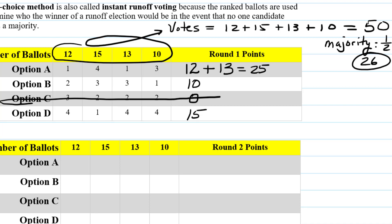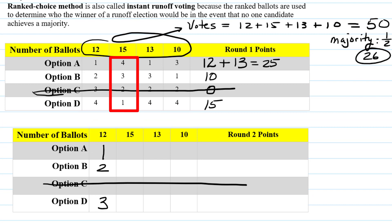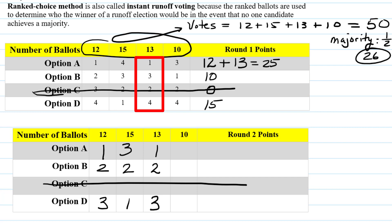When we eliminate option C, we have to renumber the votes for the remaining options. Crossing off option C, in the first ballot variation A had first, B had second, and D had fourth — but now with only three candidates, it's A first, B second, D third. In the second column with 15 ballots, D is still first, but with second place eliminated, B moves up to second and A moves up to third. In the third column, A has first place; B was third but moves up to second, and D moves up to third. In the last column, B got first place; C was second but is eliminated, so A moves up to second and D moves up to third.